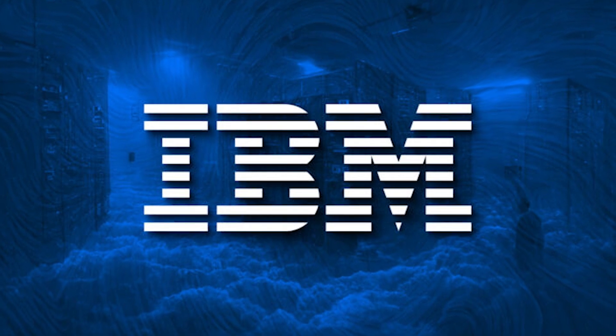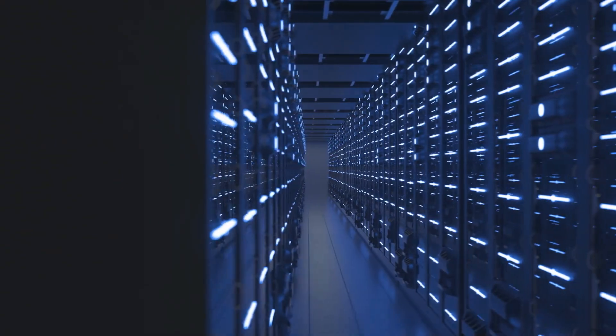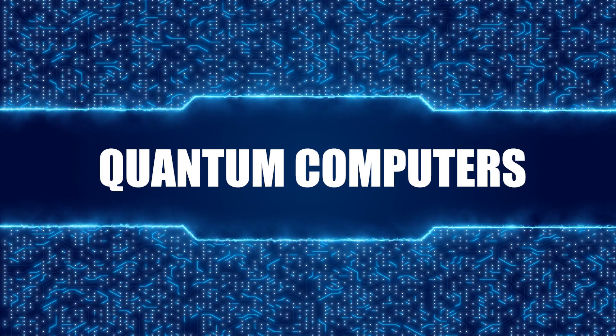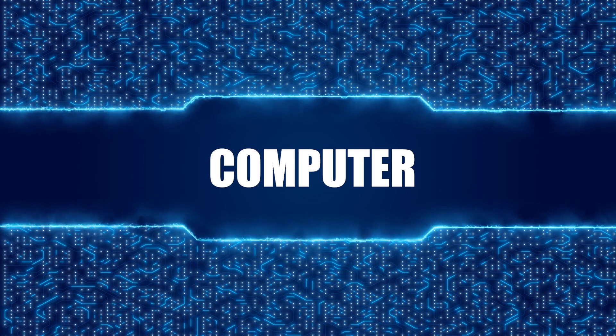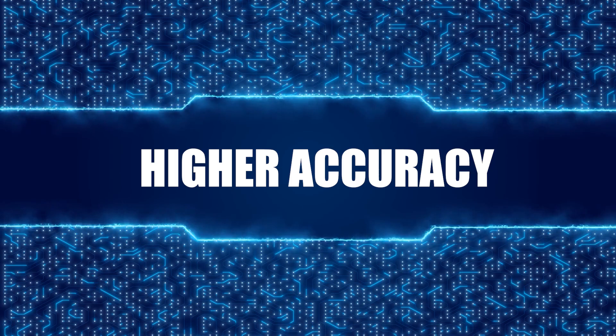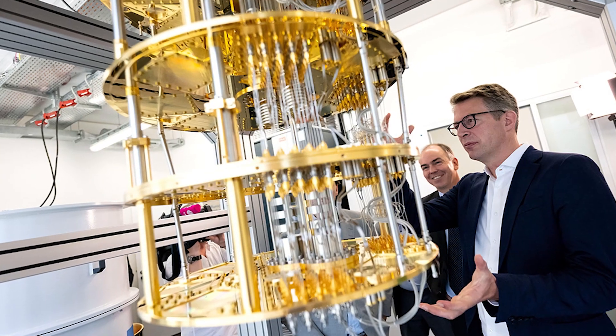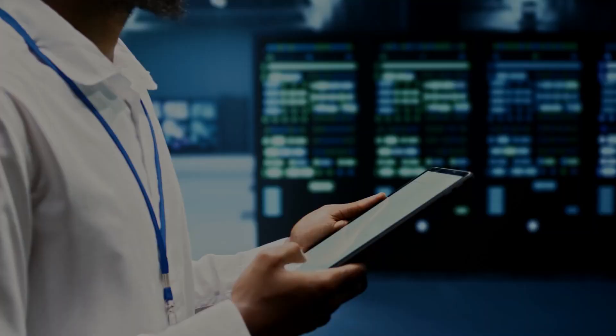IBM strongly disputed this claim, saying that Google had greatly overestimated the power of its supercomputers. Google said that quantum computers are better than classical computers, but IBM said that a classical computer could do the same job in 2.5 days and with much higher accuracy. Still, Google's statement was seen as a major step forward in the history of quantum computing.